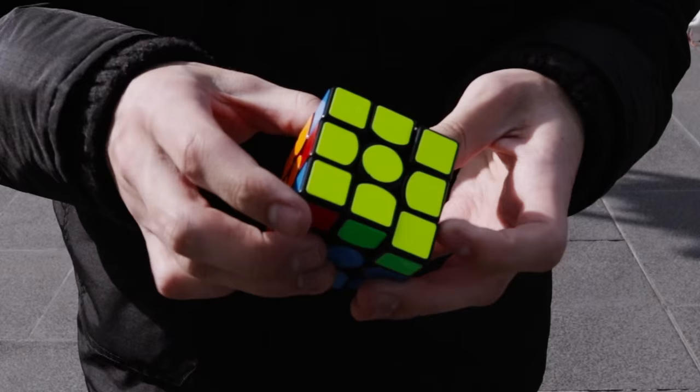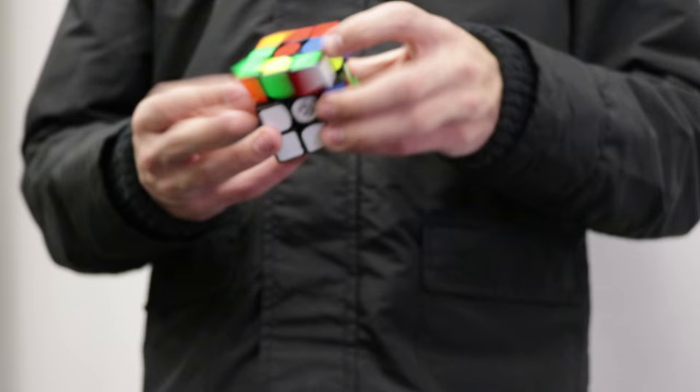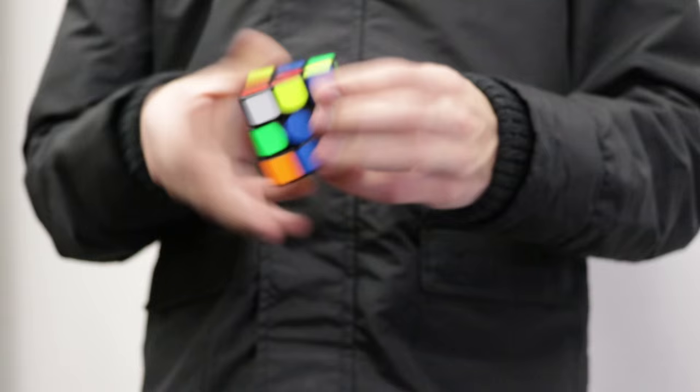One thing is when you're starting out, a lot of tutorials would say always do the white side first or always do the green side first. But one helpful thing is when you get a scrambled Rubik's Cube, there'll be actually some sides which are easier to start on than others.